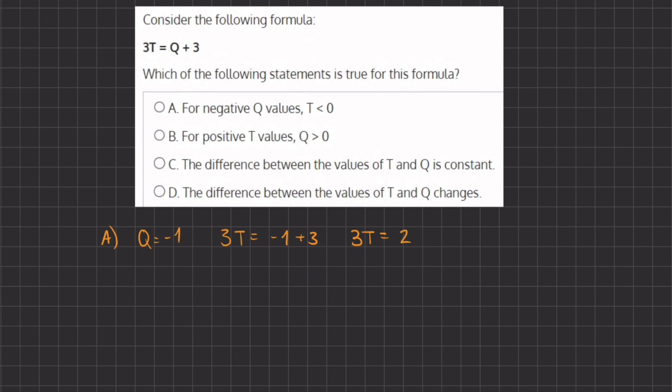And now if we isolate T by dividing by 3 on both sides, we get T = 2/3, which is not what the statement says because we don't get a negative value for T, meaning that we can disqualify option A. Now let's move on to B.